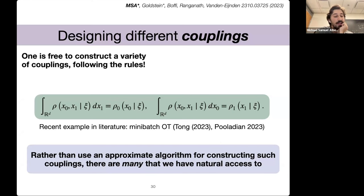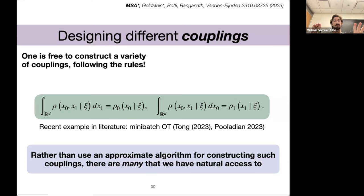Alex Tong, Ricky Chen, Yaron Lipman, and Alex Polidian had interesting ideas about constructing a coupling where you sample X0 and X1 in a way that can be more optimal by using mini-batch optimal transport methods — running sync-horn on your mini-batch where you drew a bunch of X0 and X1. But the constraint on constructing a coupling is really just that the joint density properly marginalizes.